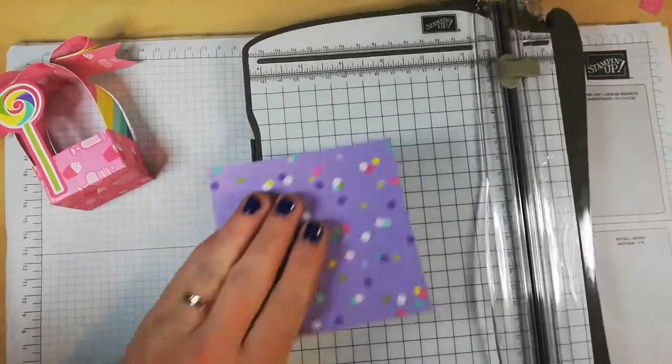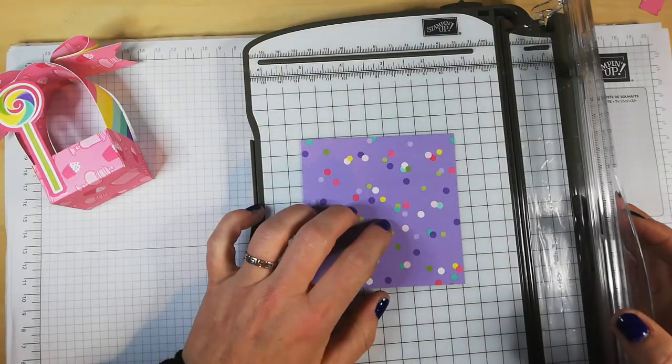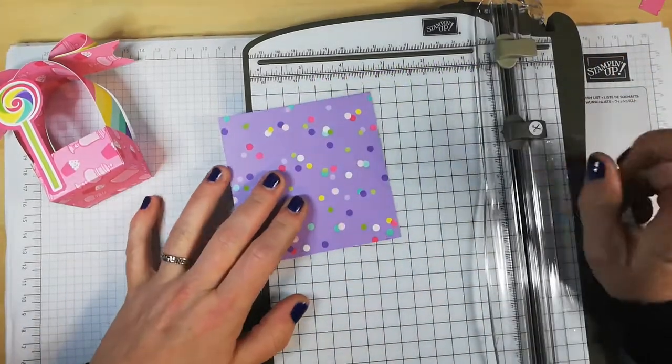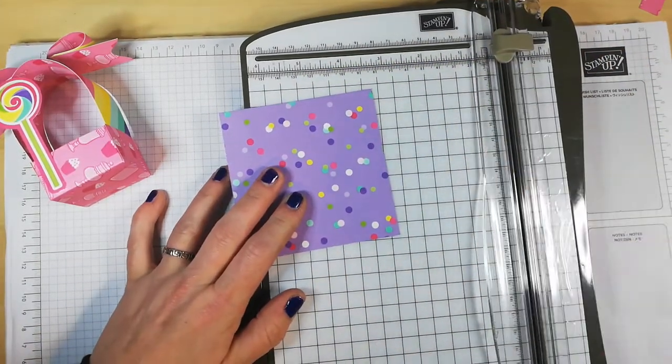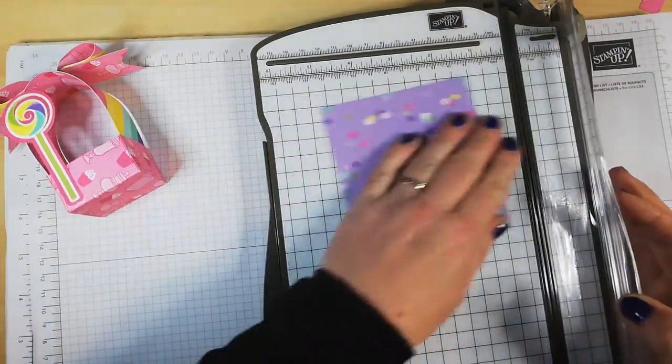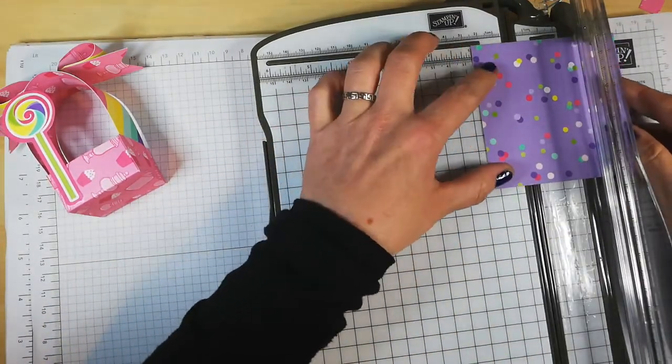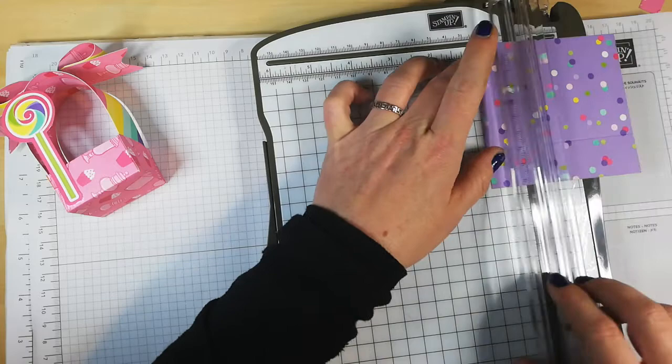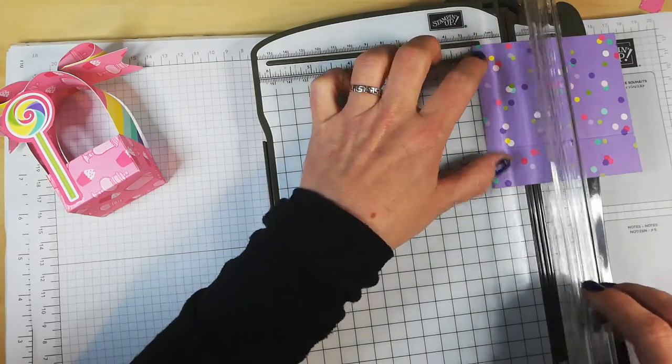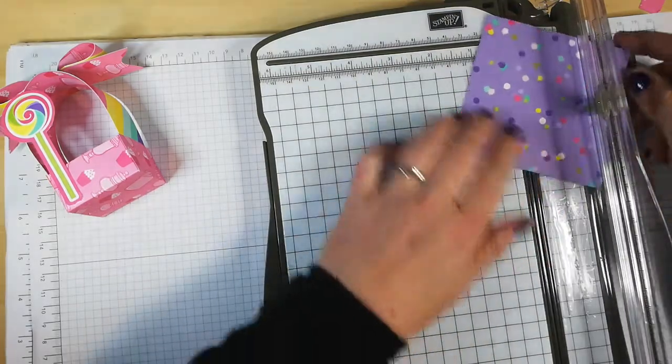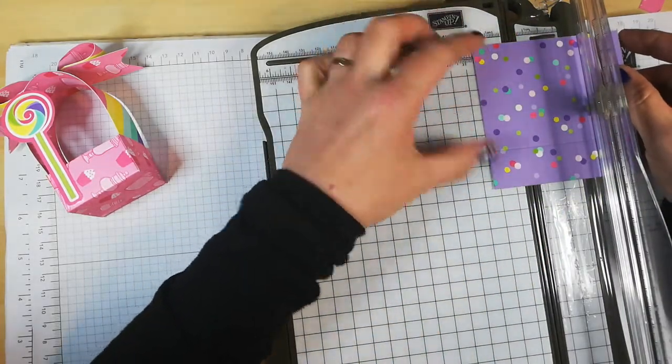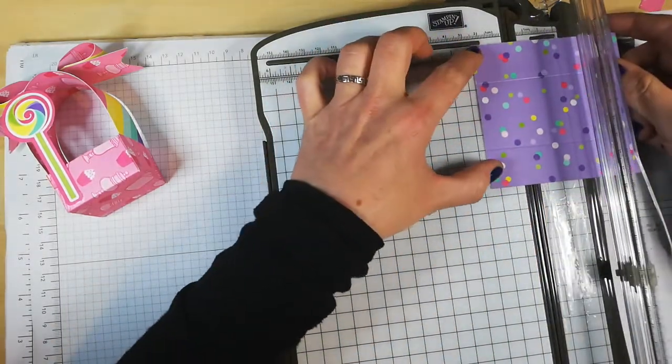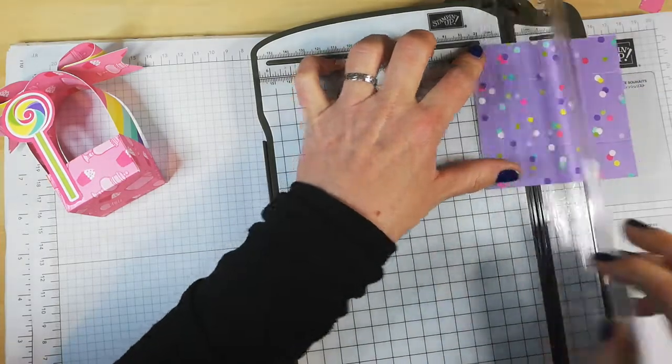So what I've done is for the box base, you need a 3¾ square inch piece of DSP. Now I've already cut this down. Make sure that your cutter is out of the way, down at the bottom, and we're wanting to score it at 1 inch all the way round. Just do each end and flip it round. It's a very basic project, basic box, but the finished sample is just super cute.